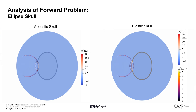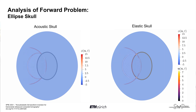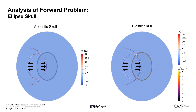We've modeled the forward wave fields using the spectral element method, which is a pretty common numerical framework used in global scale seismology problems. We get pretty similar results in both cases for the primary transmitted and reflected wavefronts for low incidence angles, but the secondary arrivals are quite a bit stronger in the case where we consider an elastic skull.